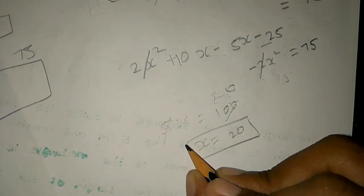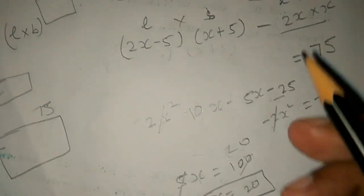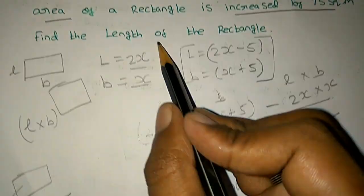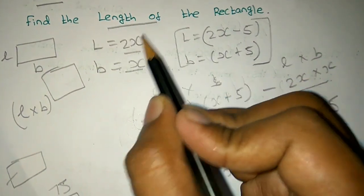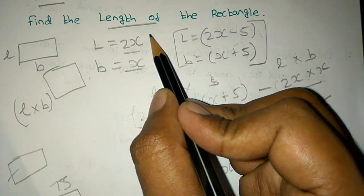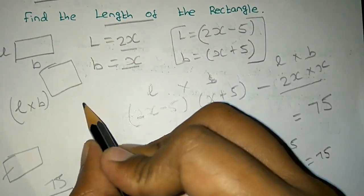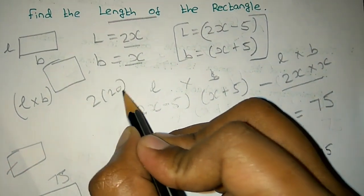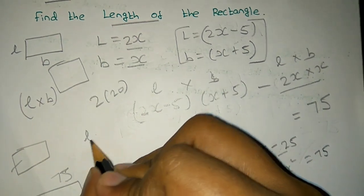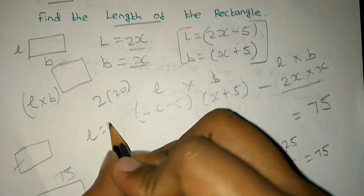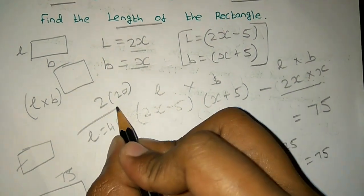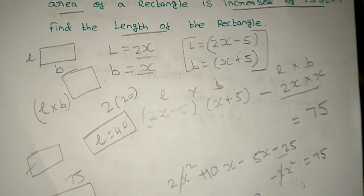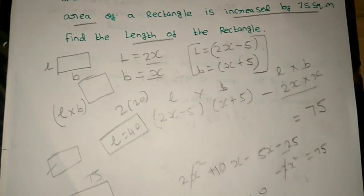So x = 20. Therefore the breadth is 20, the length is 2×20 = 40. Now we have the dimensions to find the area or perimeter as required.